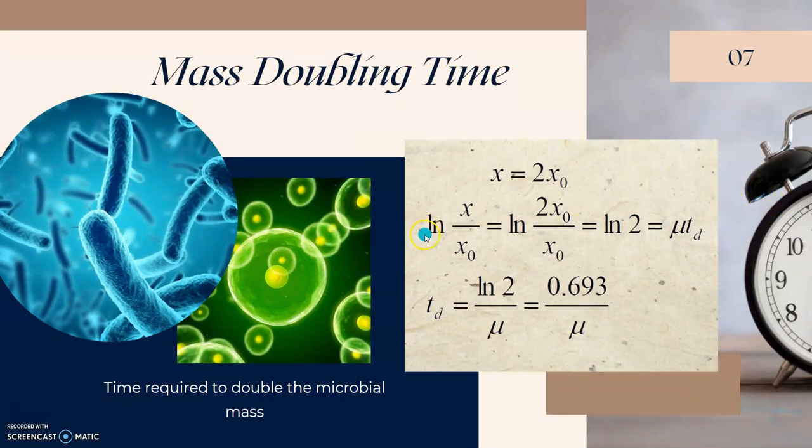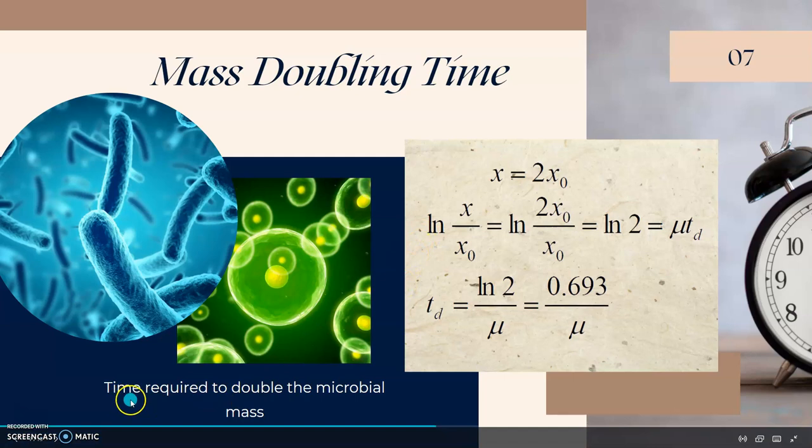Next is mass doubling time. Mass doubling time is the time required to double the microbial biomass, where the biomass equals 2 times initial biomass. By substituting x equals 2x₀, we get ln(2) by canceling out x₀, which equals μ times t_d. So t_d equals ln(2) divided by μ, which equals 0.693 over μ.